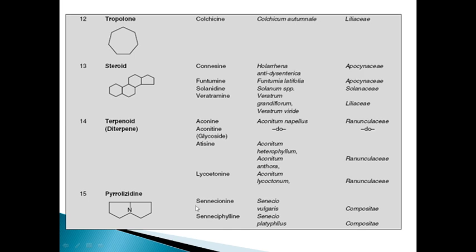The last class is pyrrolizidine alkaloids. An example is senecionine. Senecio vulgaris is the botanical origin and Compositae is the family.